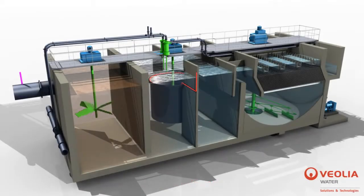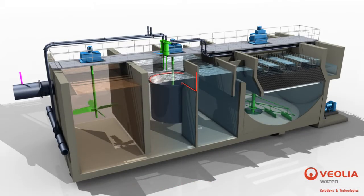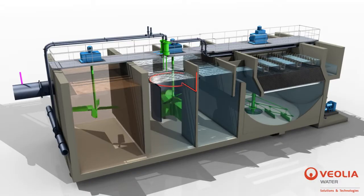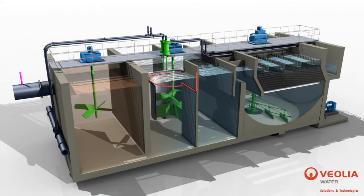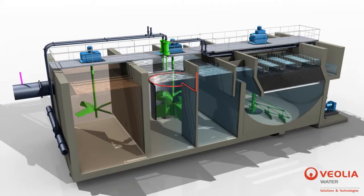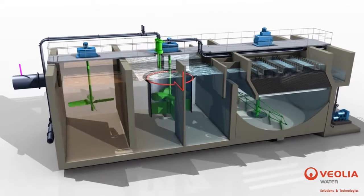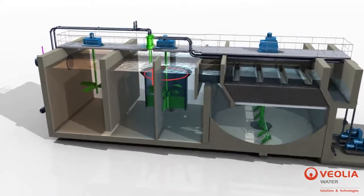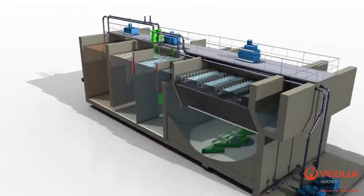Actiflow Turbo is a high-rate compact water clarification process in which water is flocculated with microsand and polymer in a turbomix draft tube. The microsand enhances the formation of robust flocks and acts as ballast, significantly increasing their settling velocity.